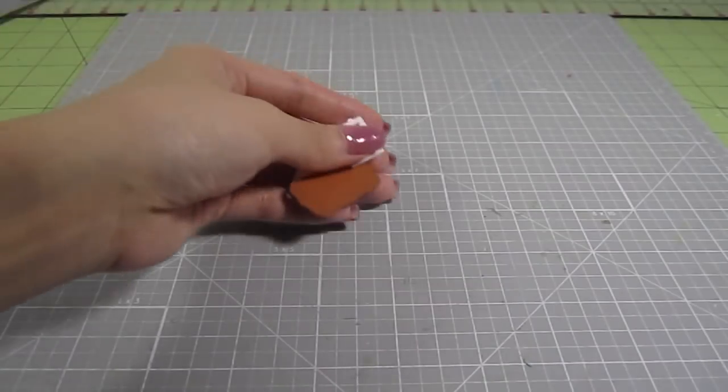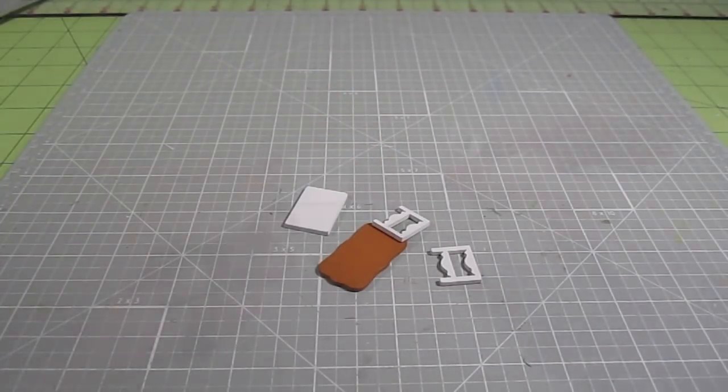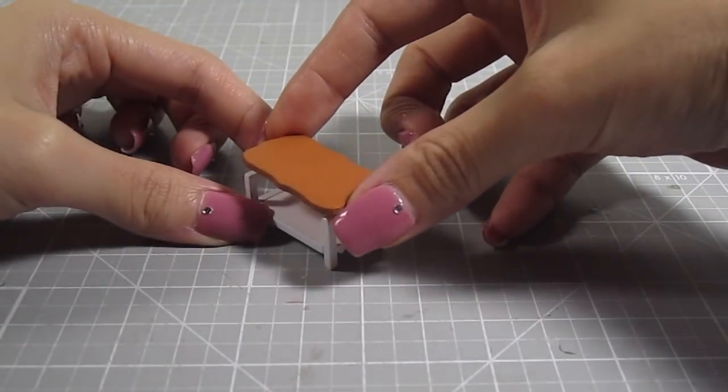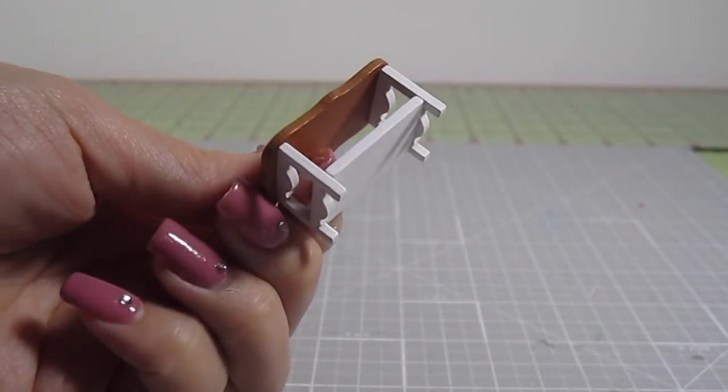For the front of the couch, let's make a coffee table. These are the pieces you'll need. Simply glue the sides onto the white rectangle. Then position the brown countertop in place. Very simple.